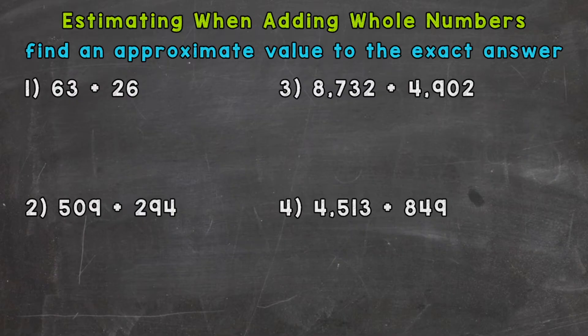So for number one it's going to be the tens place, the 6 and the 2. So 63 rounded to the tens place is 60 and 26 rounded to the tens place is 30. So we can do 60 plus 30 equals 90 for our estimate. So 63 plus 26 is approximately 90. So that equal sign that's squiggly there, that means approximately. So that's our estimate.